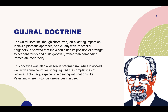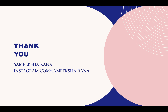Though short-lived, this doctrine left a lasting impact on India's diplomatic approach, particularly with its smaller neighbours. It showed that India could use its position of strength to act generously and build goodwill, rather than demanding immediate reciprocity. This doctrine was also a lesson in pragmatism — while it worked well with some countries, it highlighted the complexities of regional diplomacy, especially in dealing with nations like Pakistan, where historical grievances run deep. In conclusion, the doctrine was a vision for a more peaceful, cooperative South Asia, one where India's leadership role would be defined not by domination, but by magnanimity and diplomacy. Though the doctrine has evolved over the years, its core principles still resonate in India's current foreign policy.